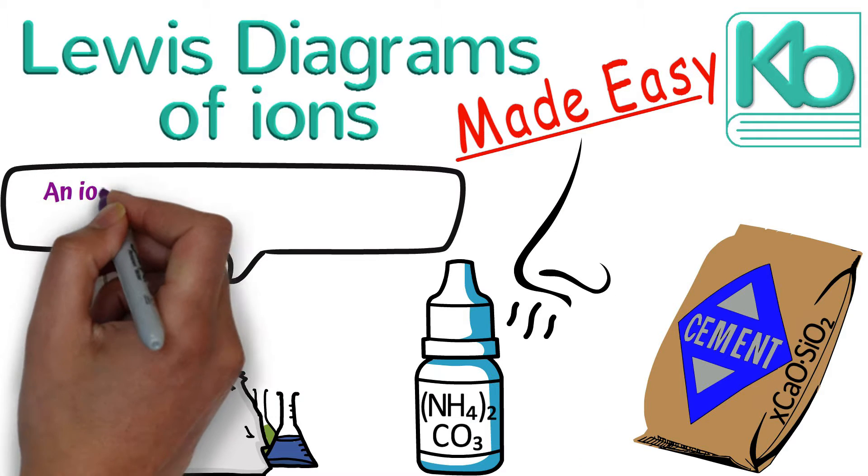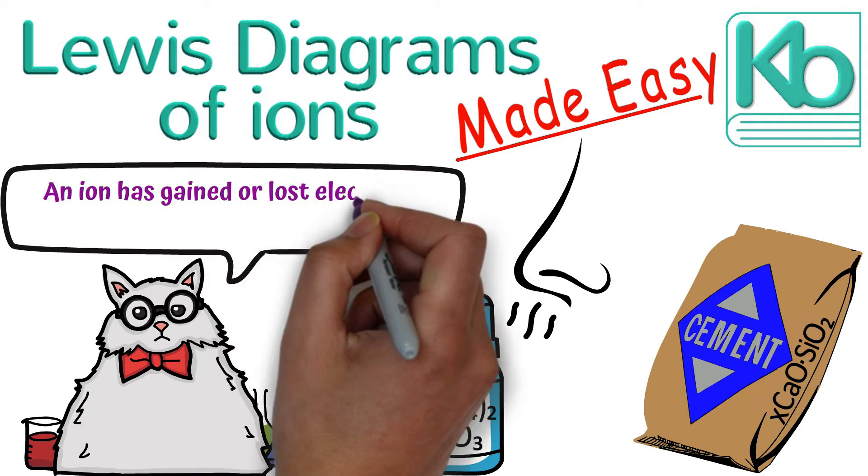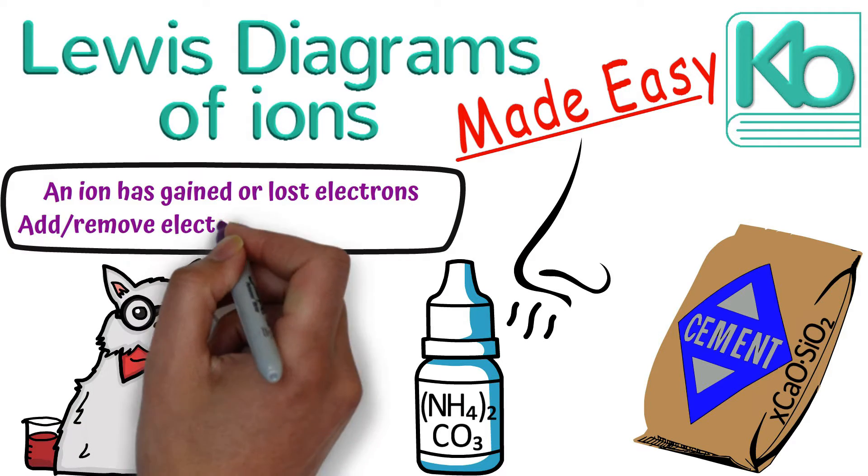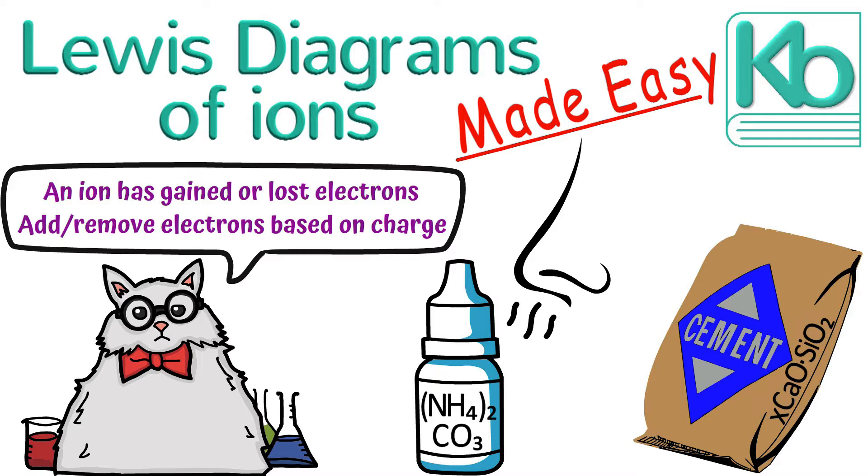An ion is a particle that has a charge because it has gained or lost one or more electrons, so we need to add or remove electrons based on the charge of the ion.